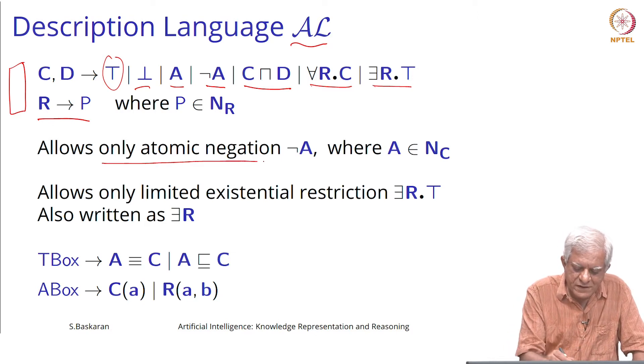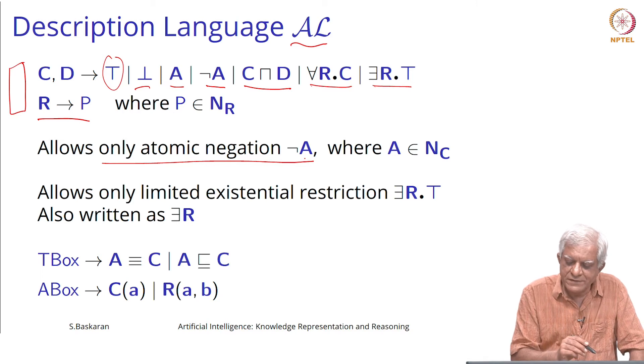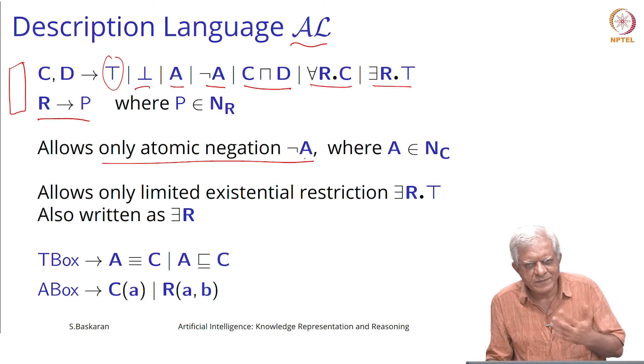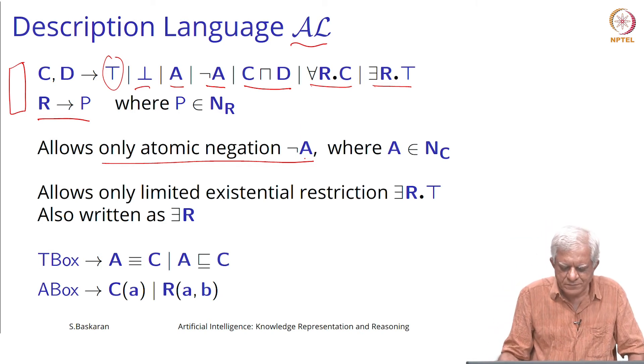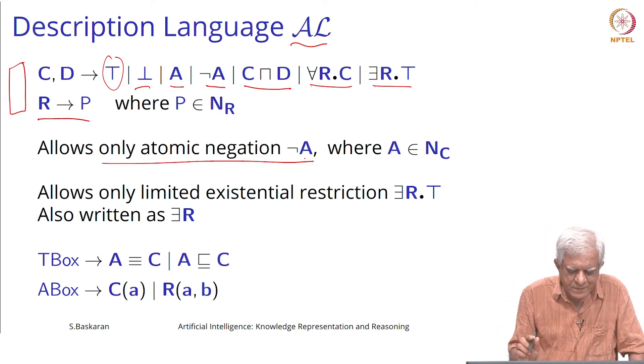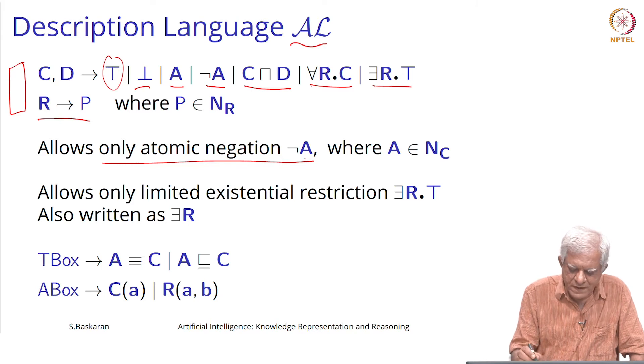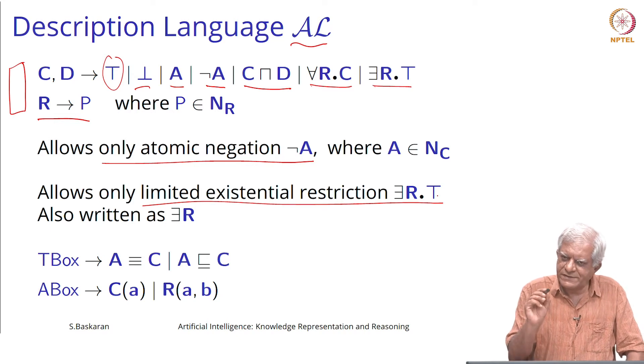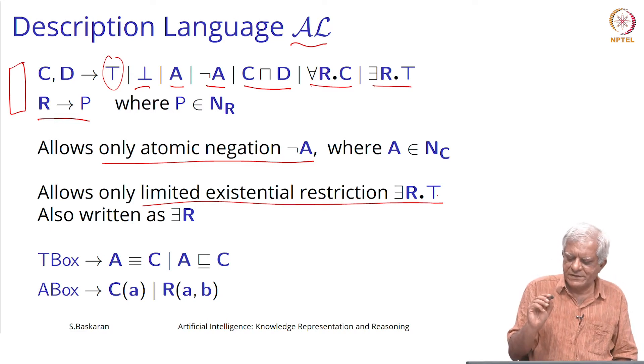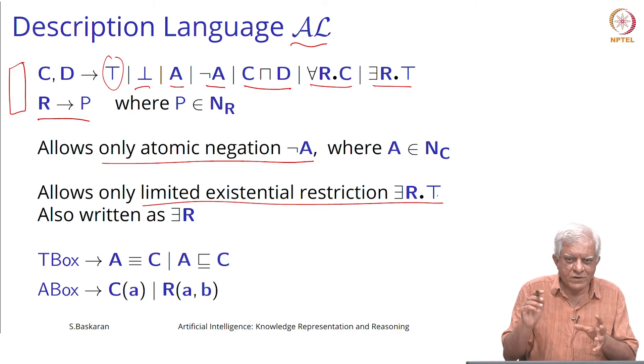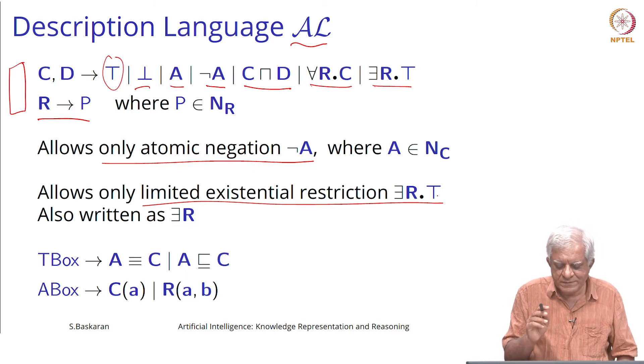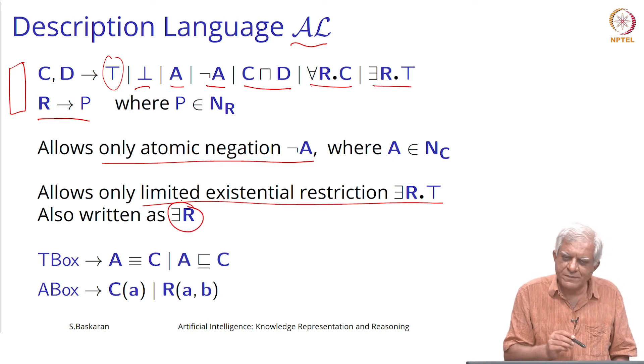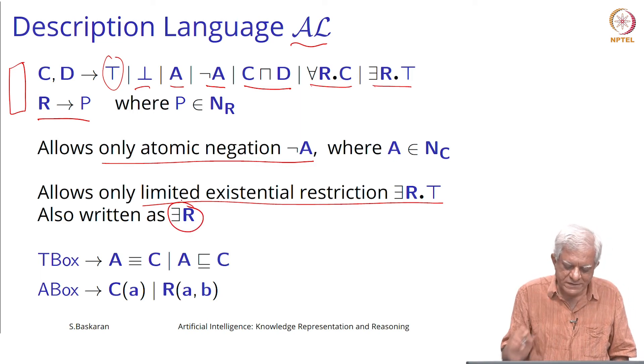As we have said here, it allows only atomic negation. You cannot take a complex concept and negate it. When we say negation we mean the complement. It allows only limited existential restriction that there exists a role filler. We are not saying about what is the category it comes from, but at least one role filler must be there and we can also say stated simply by saying there exists R.